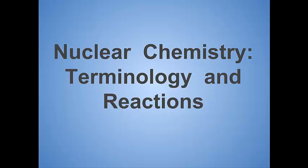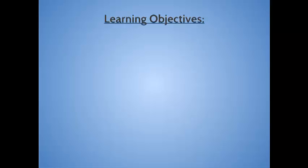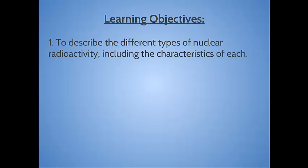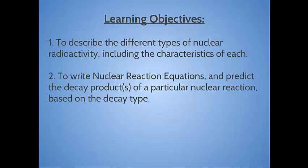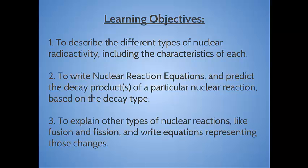We're primarily focusing on the terminology and the reactions of nuclear chemistry. Our learning objectives are three. First, to describe the different types of nuclear radioactivity and their characteristics. Second, to write nuclear reaction equations and predict the products of the decay based on the decay type. And finally, to explain other types of nuclear reactions like fusion and fission and write equations representing them.